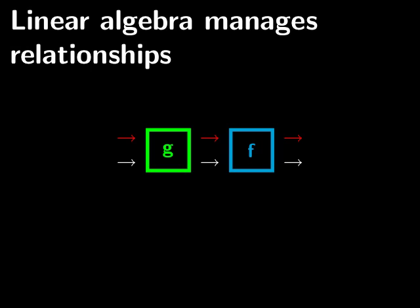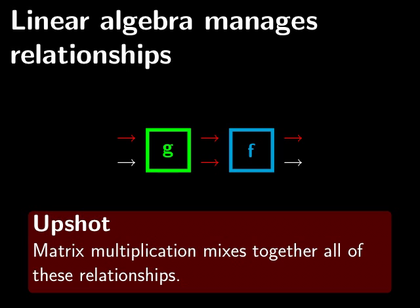Well, wiggling the first input of g is going to affect the first output of g, which is going to affect the first input of f and consequently the first output of f. But wiggling the input of g also will affect the second output of g, which will also affect the first output of f. So the upshot here is that matrix multiplication is mixing together all of these input and output relationships. That's really what the chain rule is about.